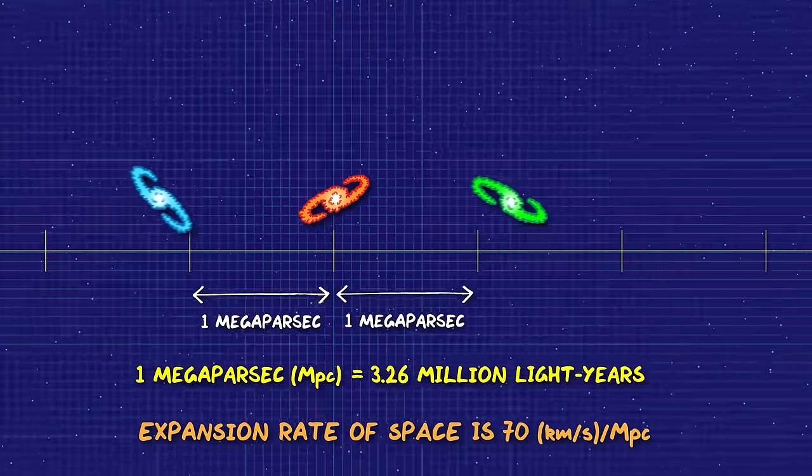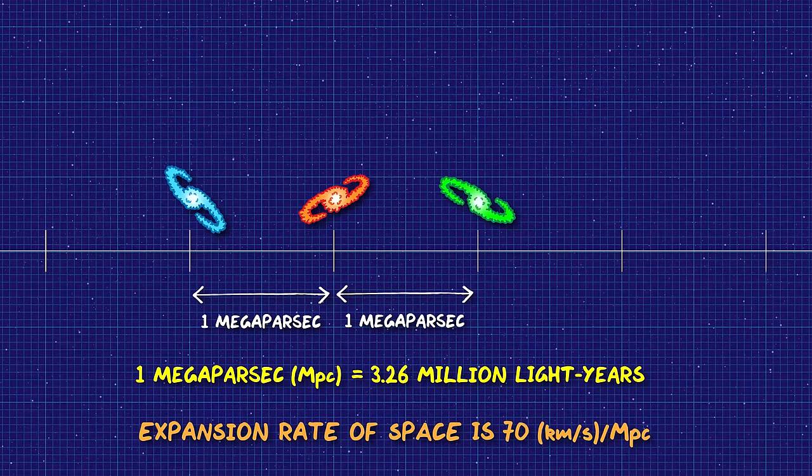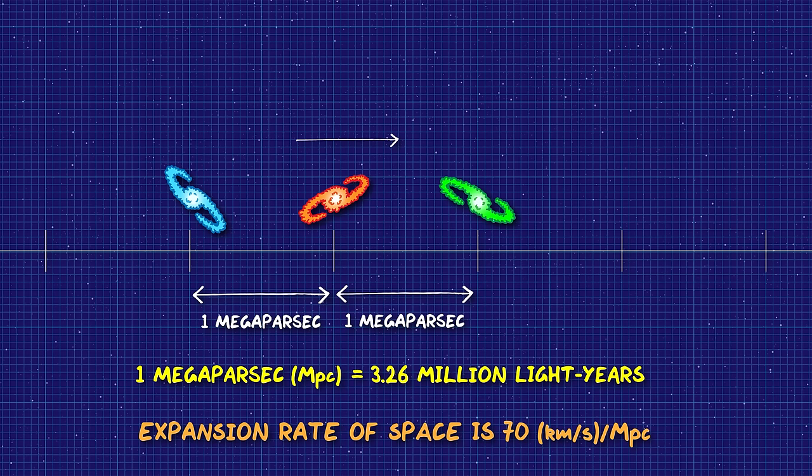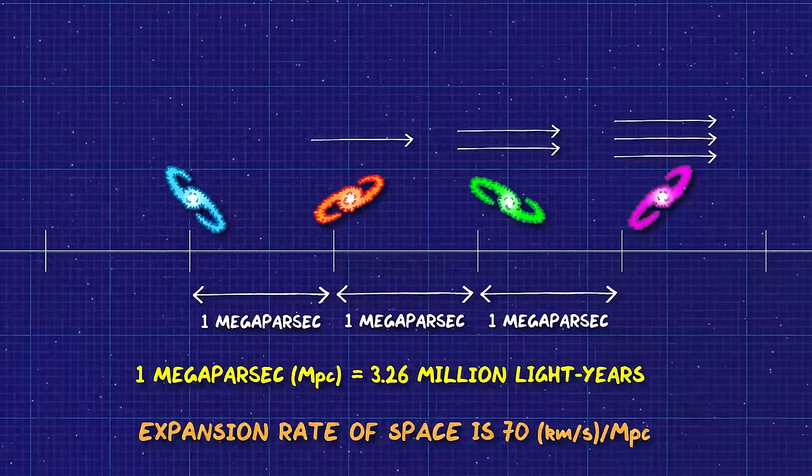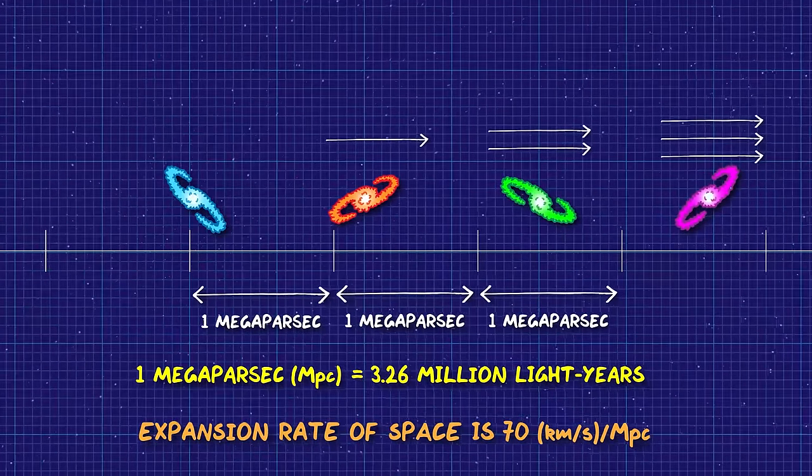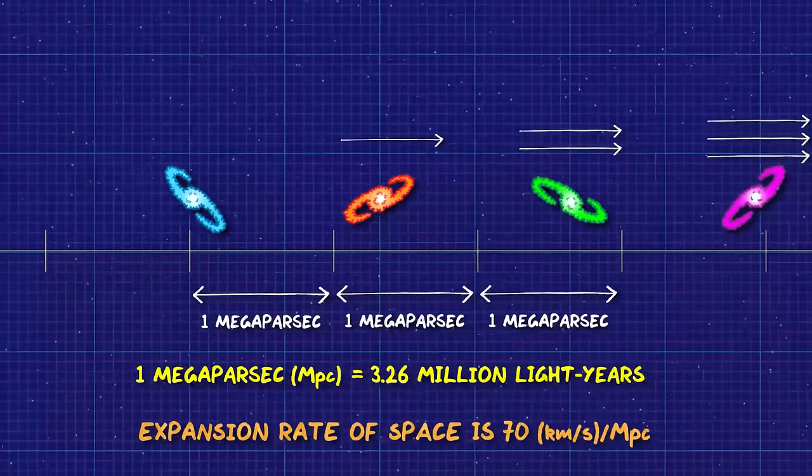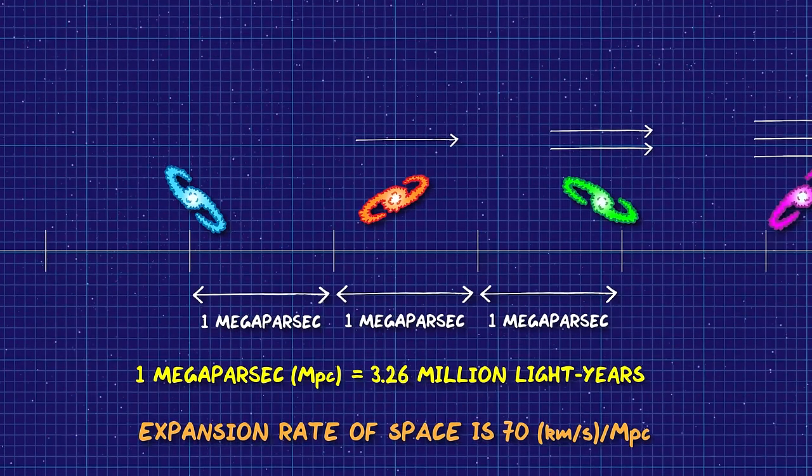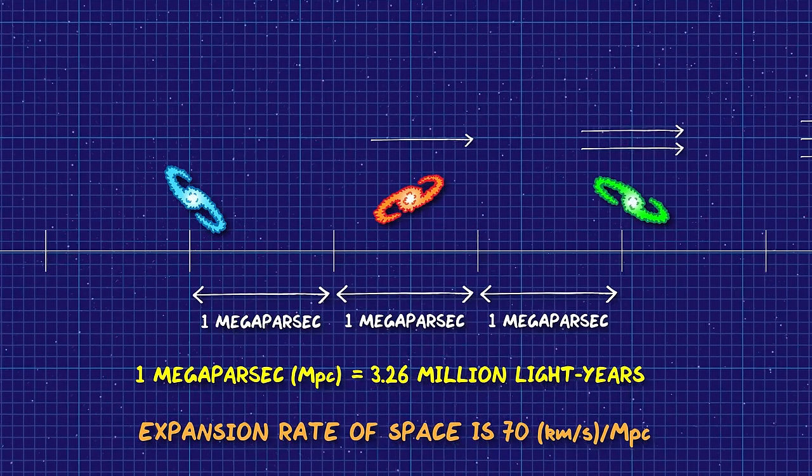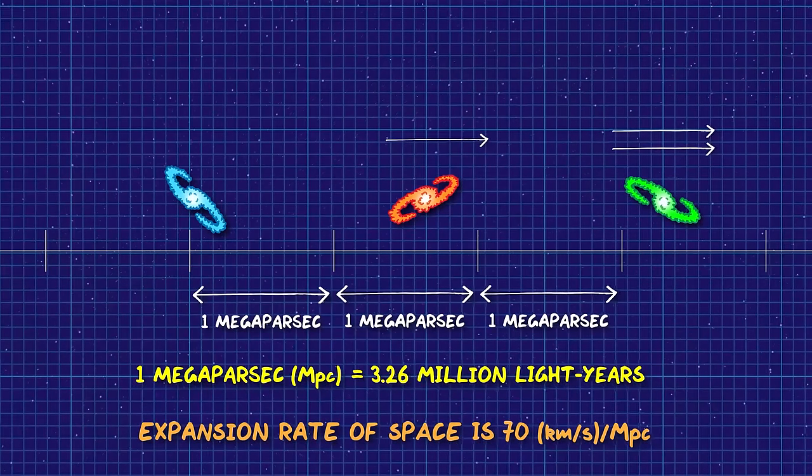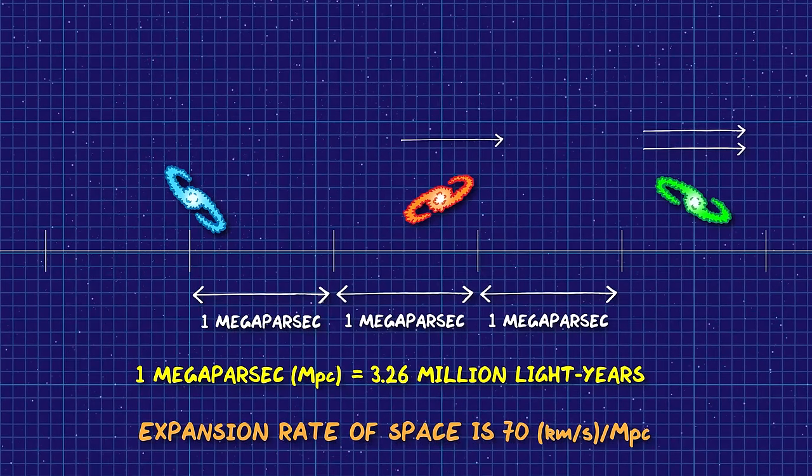Now let's see what this looks like from the leftmost galaxy. They would see our original galaxy moving away at 70 kilometres per second. But the second galaxy would be moving away twice as fast. And another galaxy that's a further 3 megaparsecs away would be retreating three times as fast. And you can see that the further and further away you go, the faster and faster this speed gets, until you reach a point where the distant galaxies are moving away from us faster than light.